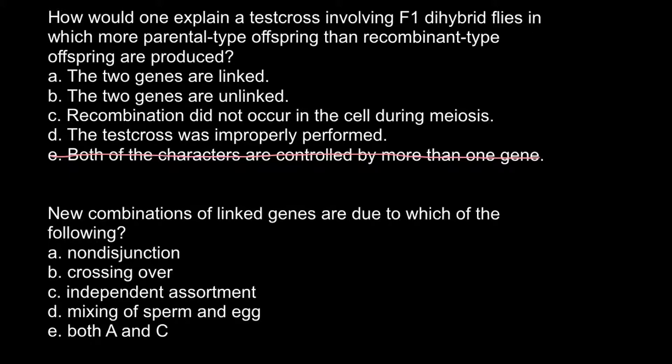Answer D: the test cross was improperly performed. This is not the case — this is what can be normally observed in experiments with genes when we determine if genes are linked or not. Answer C: recombination didn't occur in the cell during meiosis. Recombination always occurs during meiosis, not during mitosis, so this is also not a correct answer.